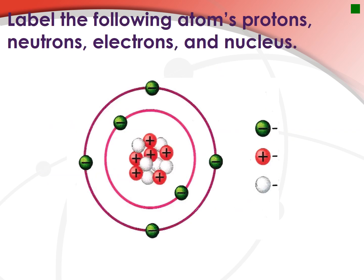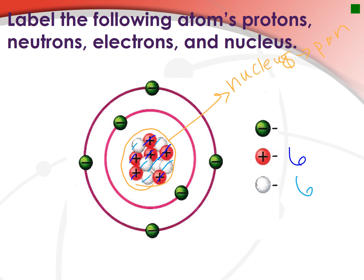Let's label the different parts of the atom. The nucleus is this big circle. What makes up the nucleus? We've got protons and neutrons. The protons are the red ones — there are 6 of them. The neutrons are neutral with no charge, and if you count them, they also have 6. And your electrons are outside of the nucleus — they too have 6 electrons.